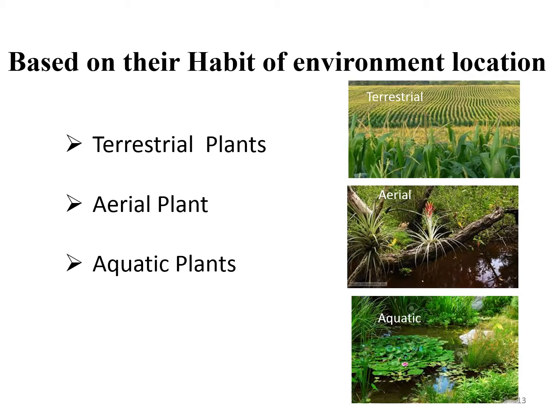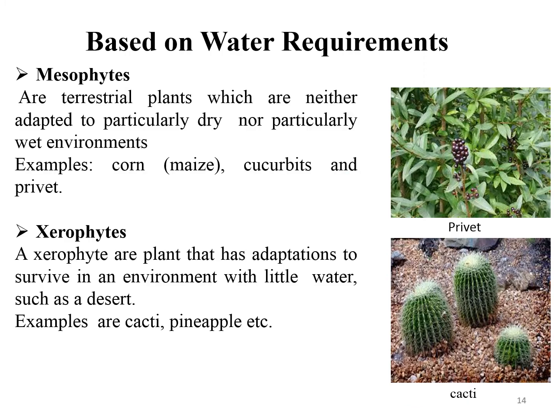Classification on the basis of habitat or environmental location: some plants are terrestrial, some are aerial, and some are aquatic. Terrestrial plants live on land; aerial plants are above ground and attached to other plants; aquatic plants live in water. Mesophytes are terrestrial plants which are neither adapted to particularly dry nor particularly wet environments. Examples are corn, coriander, and privet.